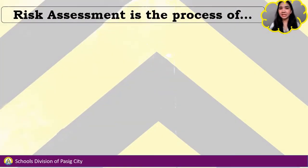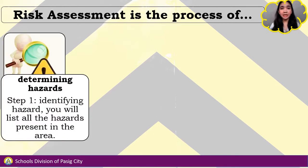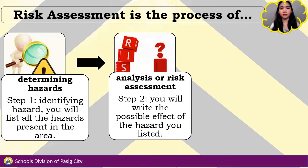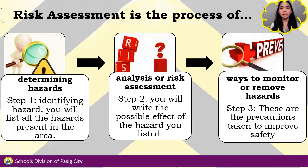Risk assessment is the process of determining hazards. In this step, you identify hazards — you list all the hazards present in the area. Risk assessment also involves analysis, where you write the possible effects of the hazards you listed. Then, risk assessment includes ways to monitor or remove hazards, which are the precautions taken to improve safety.